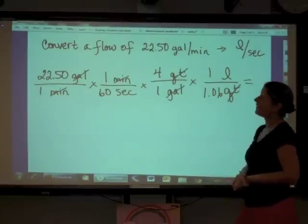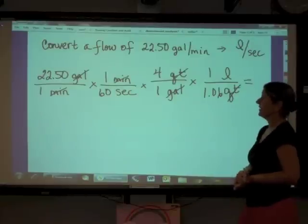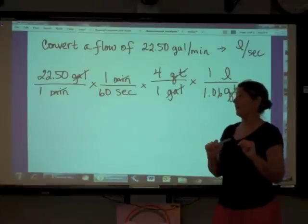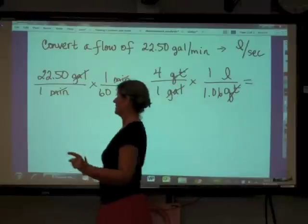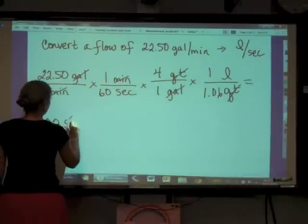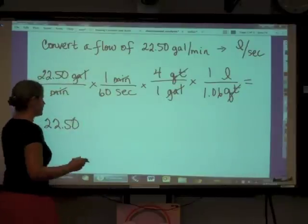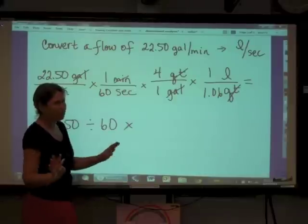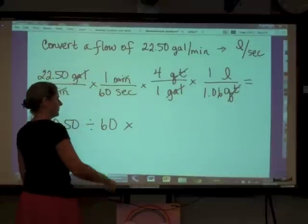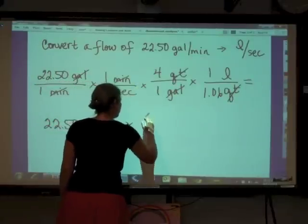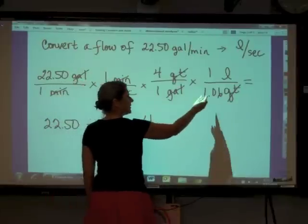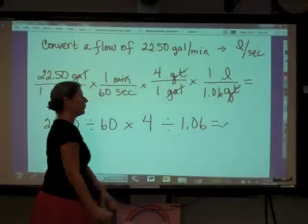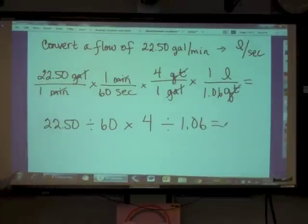So how am I going to put this into my calculator? If I was you, I would not first of all multiply and then go back and divide. What I would do is say 22.5 divided by, because it's in the denominator, 60, multiplied by, and you don't need to do equal anywhere through this, just keep going through the problem. Multiplied by because it's in the numerator, four. And then because it's in the denominator, my last function is going to be divided by 1.06 equals. Then do your equal sign.